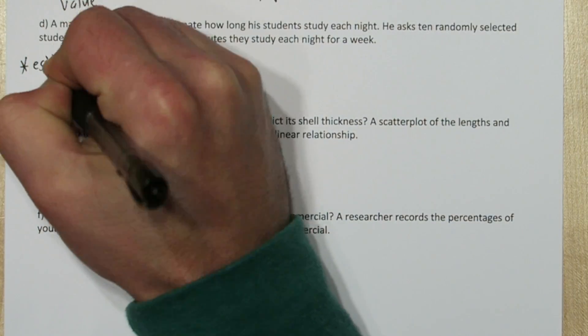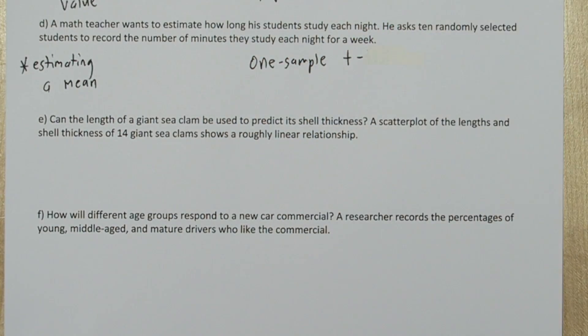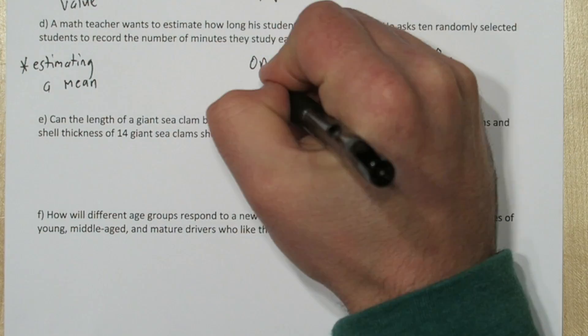In Part D, we're trying to estimate a mean, so this is a one-sample t-interval for population mean, because we're trying to estimate something, not check a claim.